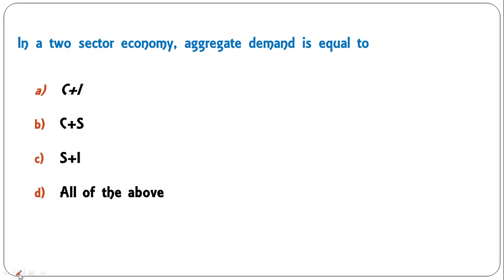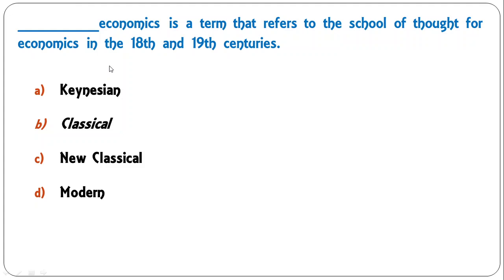In a two-sector economy, aggregate demand is equal to C plus I, C plus S, S plus I, or all of the above? The correct answer is A — C plus I, which is the summation of consumption expenditure plus investment expenditure. So A is the correct answer.